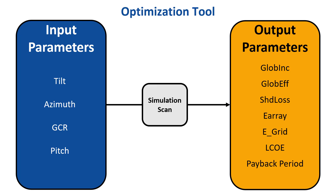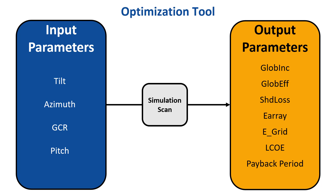Here you can see the options that are available for the Optimization tool. Batch Mode can do the same thing but with a much wider set of input and output parameters. Here is the list of output and input parameters for Batch Simulations. As you can see, there is a much wider range of options for input and output parameters here.